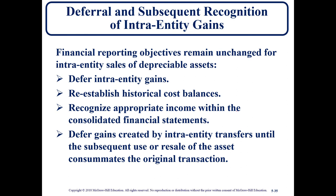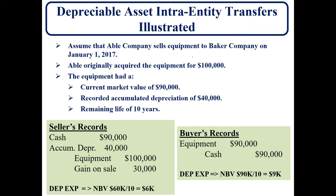Now we're looking at depreciable assets. With depreciable assets, it's going to be a little more complicated because we're also looking at depreciation expense and accumulated depreciation. We have an example: Able Company sells equipment to Baker on January 1st, 2017. Able originally acquired the equipment for $100,000. The current sales price is $90,000, with accumulated depreciation of $40,000 and a remaining life of 10 years.